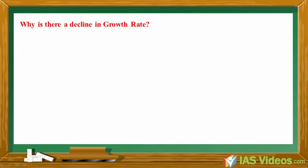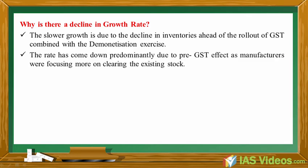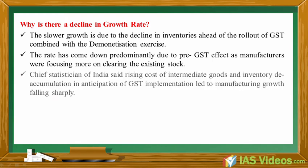Why is there a decline in growth rate? The slower growth is due to the decline in inventories ahead of the rollout of GST, combined with the demonetization exercise. The rate has come down predominantly due to the pre-GST effect as manufacturers were focusing more on clearing existing stock.